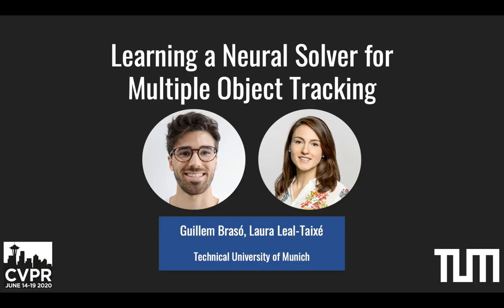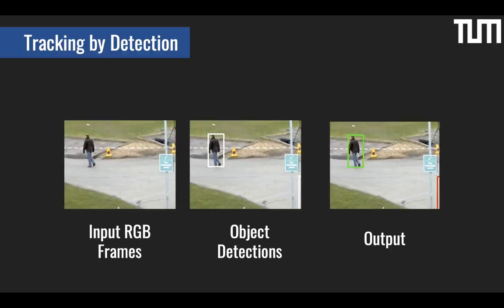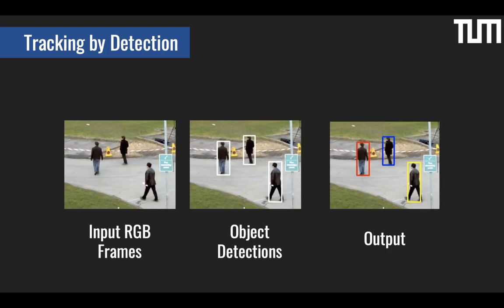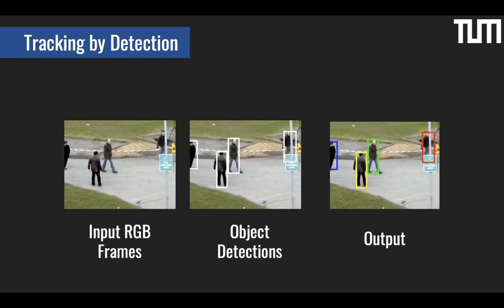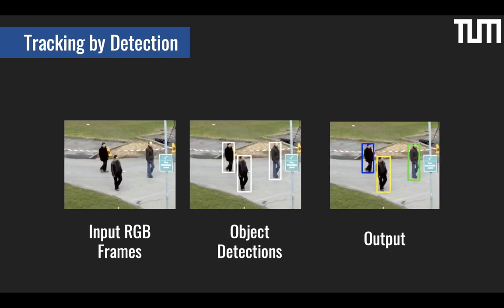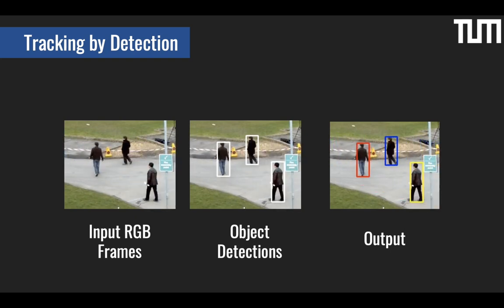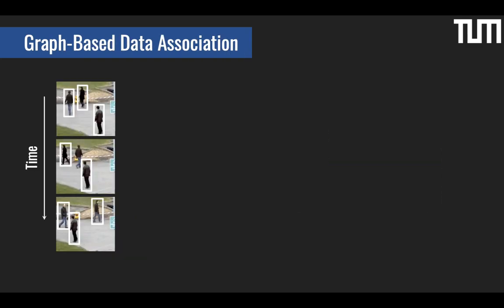Hi, my name is Guilhem and I'm going to present our work on learning a neural network for multiple object tracking. Our goal is to determine the trajectories of all objects in a video. This problem can be split into two tasks: detecting objects in every frame and then linking them into trajectories. The second step is often treated as a graph partitioning problem in which every node represents an object detection and every edge a possible temporal link.